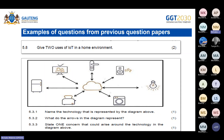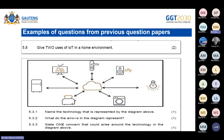Question 9.3.2, based on the same diagram, asks what the arrows represent — simply that there is communication between these devices. Question 5.3.3 asks you to state one concern about this technology. Since it is about IoT, a concern is a disadvantage: it can be hacked, security issues become a problem, over-reliance on connectivity is a problem, and there is a lack of privacy.